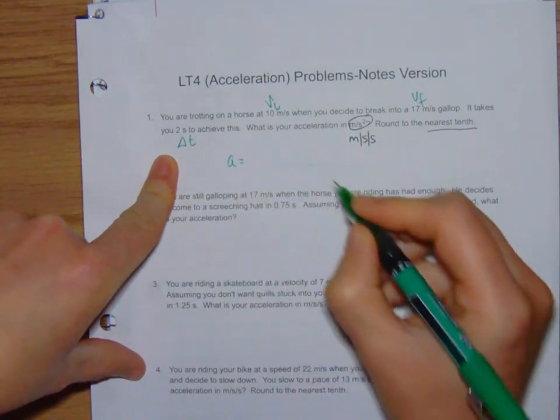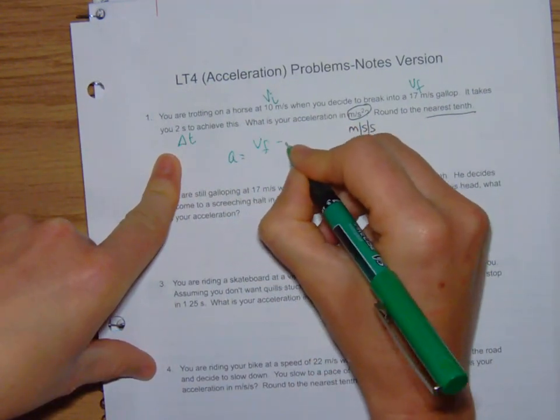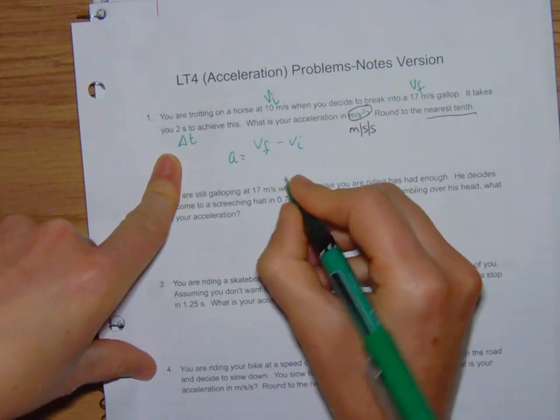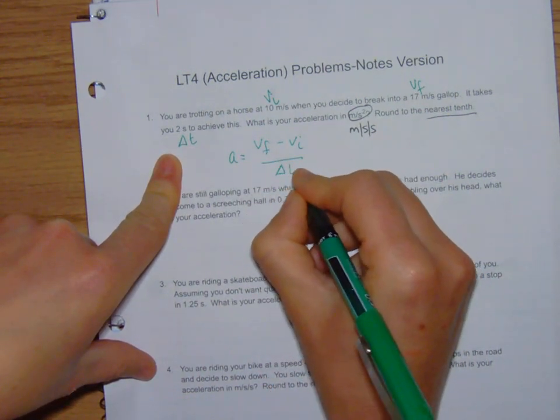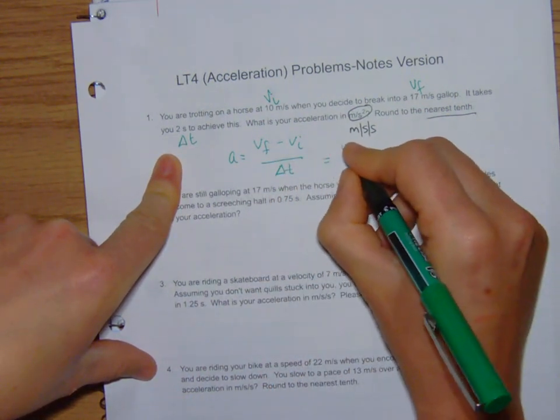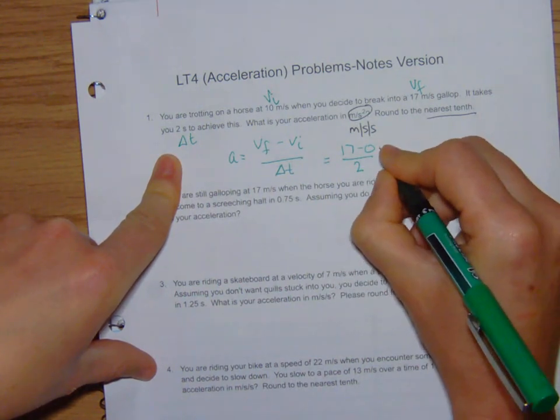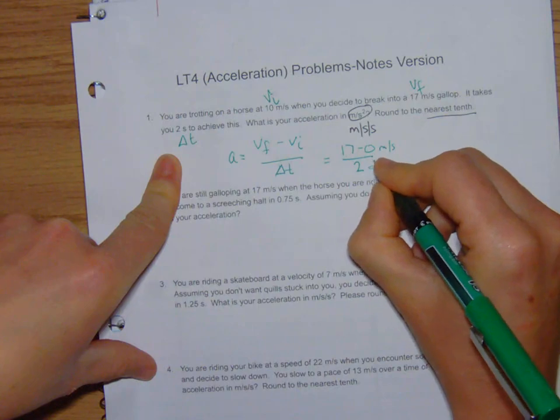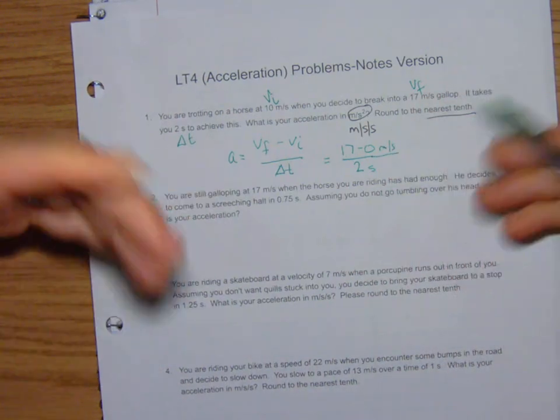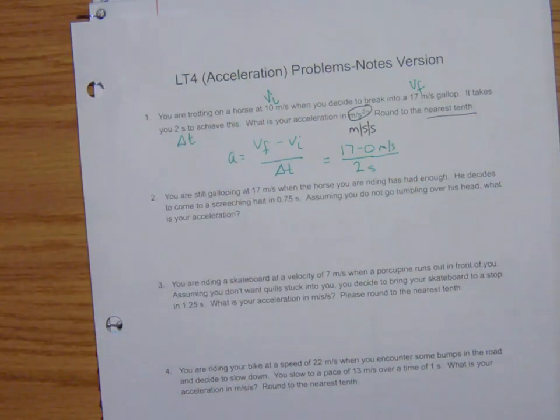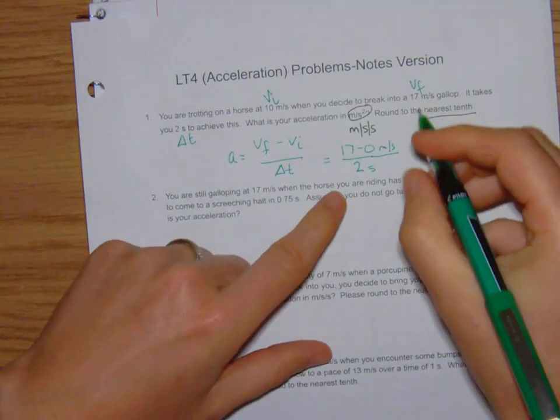So now all we do—acceleration is VF minus VI divided by how long that takes. So we have 17 minus 10. We divide it by 2. This is in meters per second. This is in seconds. That's where that squared comes from. When you divide it squares the units. It doesn't matter for this class.